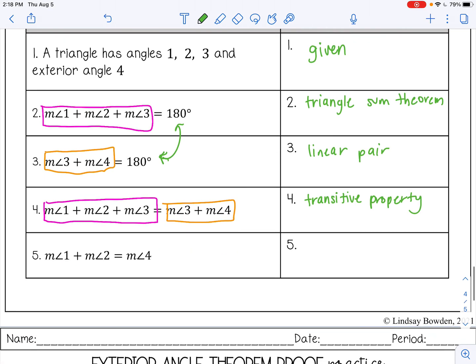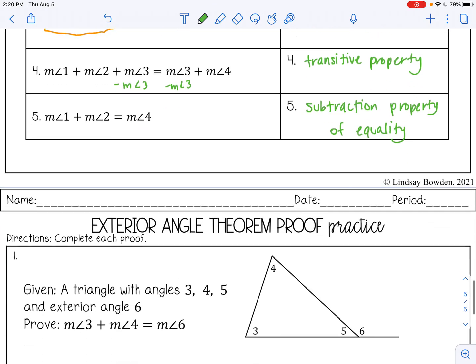And then from number 4 to number 5, it looks very similar. But if you look for just a second, there's just something missing. And what's missing is the measure of angle 3. The reason we can take that away is because we have it on both sides. So we can subtract it from both sides without changing the value of the equation. That's called the subtraction property of equality because we subtracted it from both sides. You can go ahead and stop the video and complete your practice.